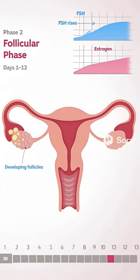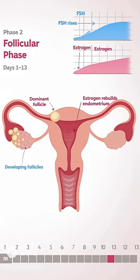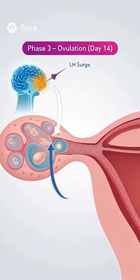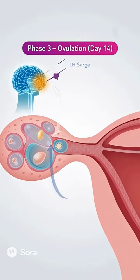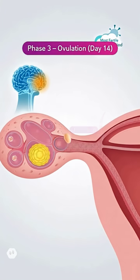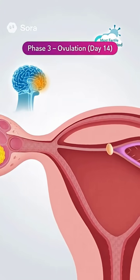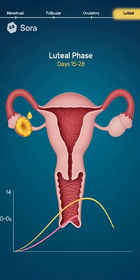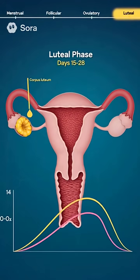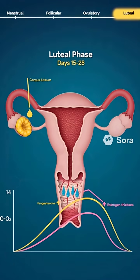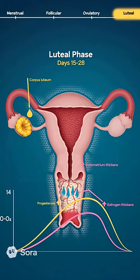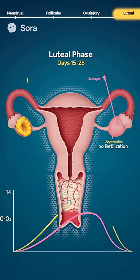During the follicular phase, rising levels of FSH stimulate several ovarian follicles, but only one becomes dominant. This dominant follicle secretes increasing amounts of estrogen. When estrogen peaks, it triggers a positive feedback loop on the pituitary, causing a surge in luteinizing hormone, or LH. This LH surge induces ovulation — the release of a mature ovum. After ovulation, the ruptured follicle transforms into the corpus luteum, which secretes progesterone and a smaller amount of estrogen.